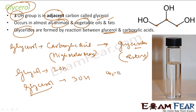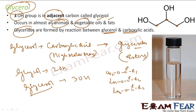An example of a glyceride structure is: CH₂O–CO–R1, CHO–CO–R2, CH₂O–CO–R3, where R1, R2, R3 represent different fatty acid chains.